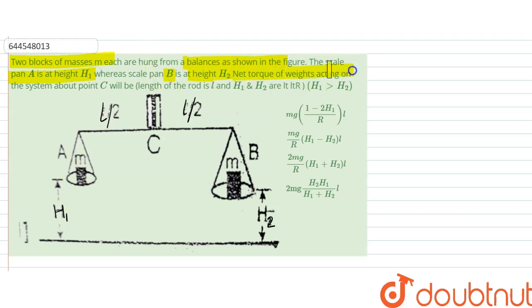Net torque of weights acting on the system about C will be how much? So let us assume that the force exerted due to this is F1 and due to this it's F2.